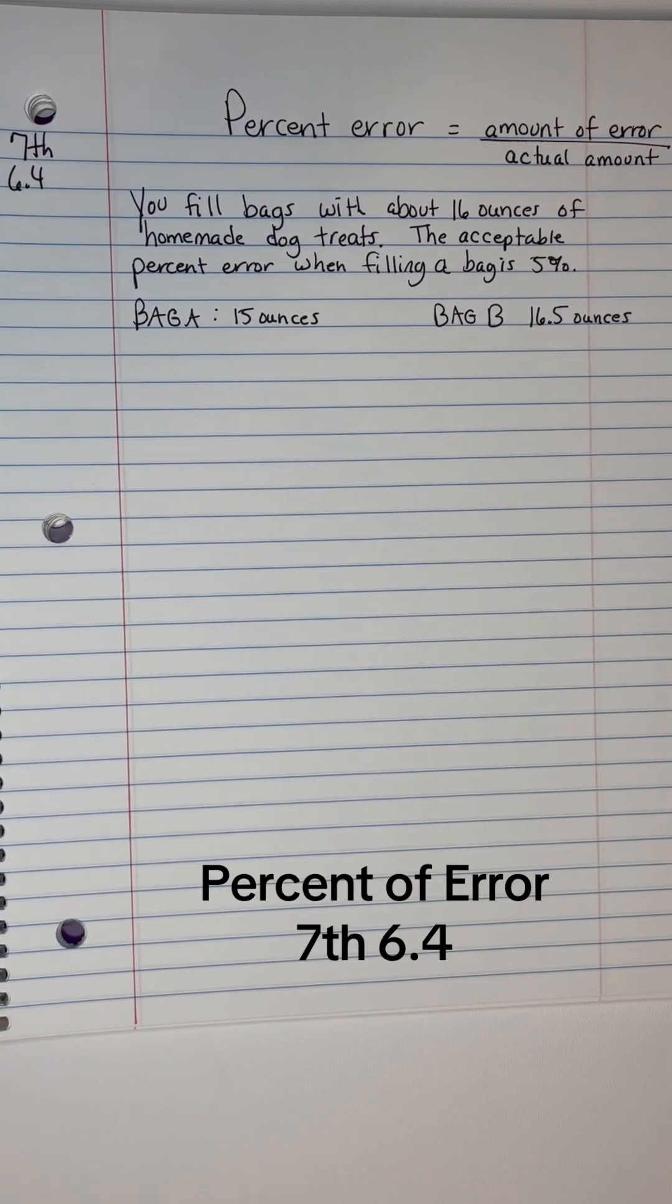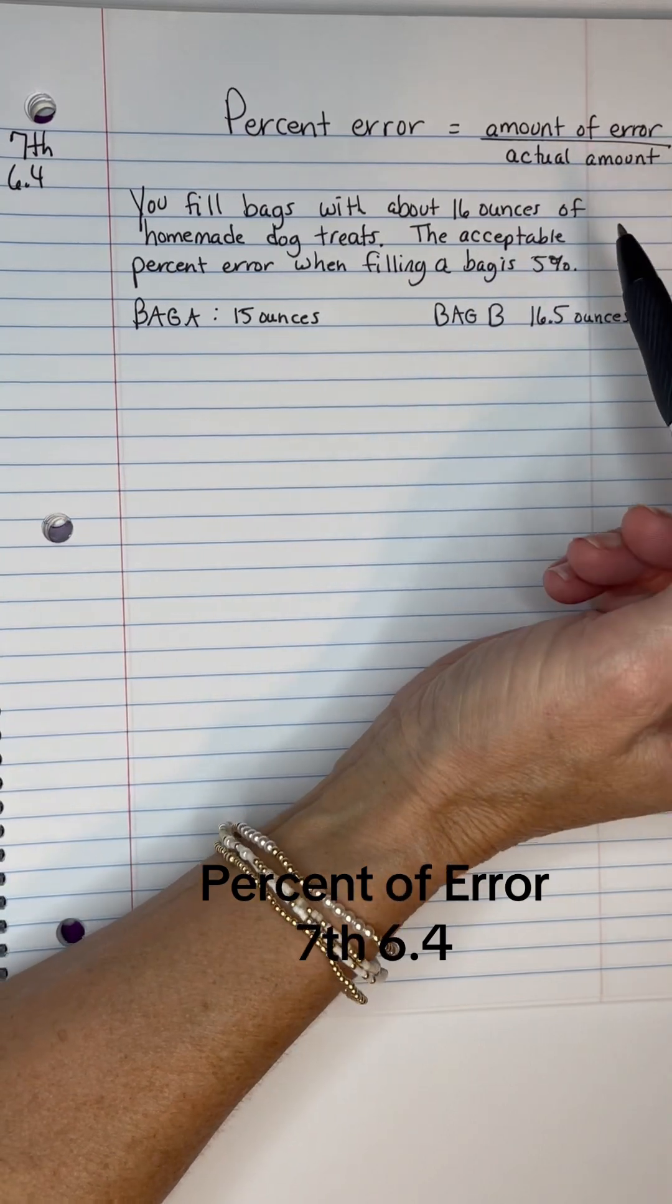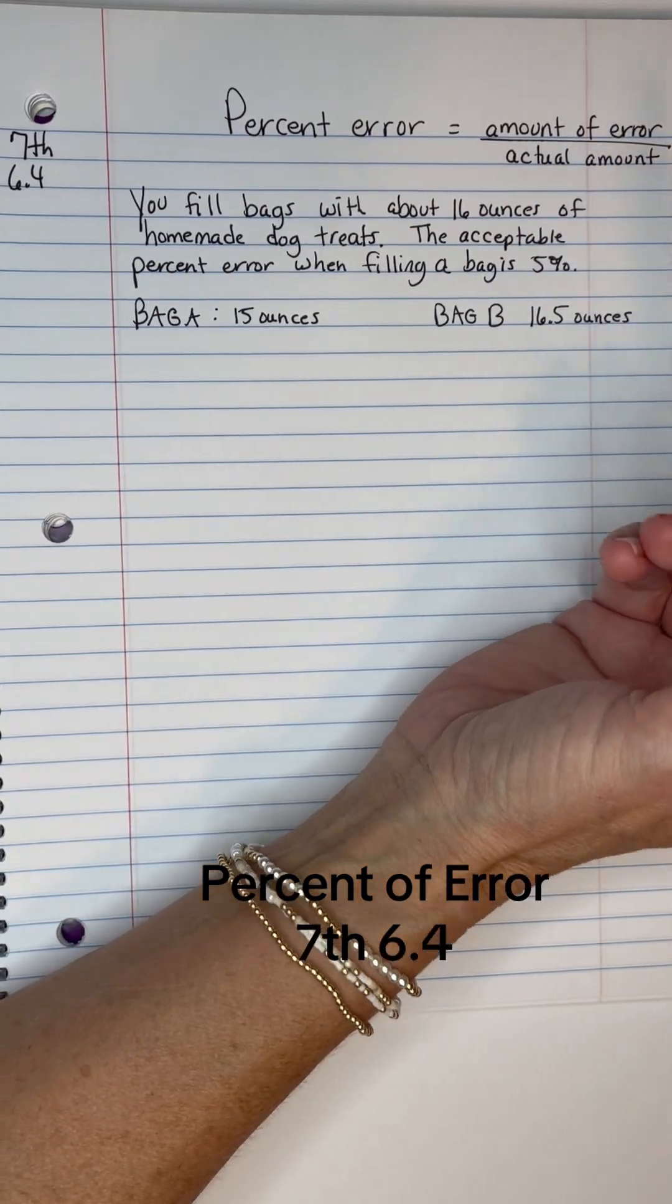Percent of error is the amount of the error divided by the actual amount of something. So let's look at a real life situation.